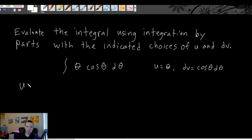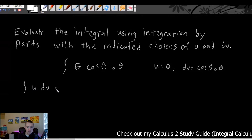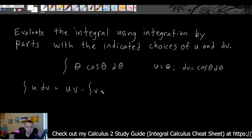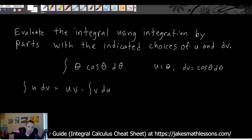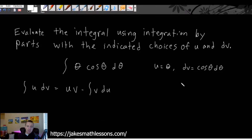The integration by parts formula — one of the formulas on my integral calculus cheat sheet, linked in the description or pinned comment — states that the integral of u times dv equals u times v minus the integral of v times du. We've already been given our u and dv. Normally that's the first thing to figure out, but since we have those, the next step is to find du and v.